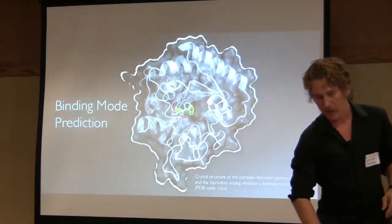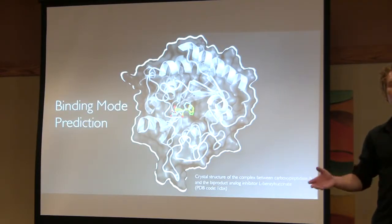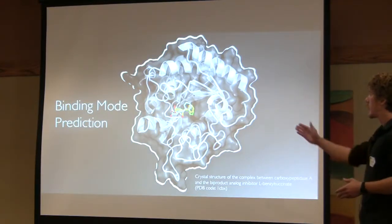Why should we care about binding mode prediction, how a small molecule binds to a protein? Most of you are studying proteins and you're curious how a ligand might interact with a protein. But beyond that, if you're working on inhibitor discovery or antagonist discovery, you don't know how a certain ligand binds to a binding pocket in the protein. You're curious how can we predict that, and also if you're fitting ligands in crystal structures, that would be another application.